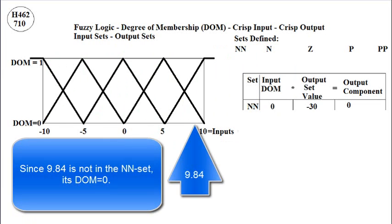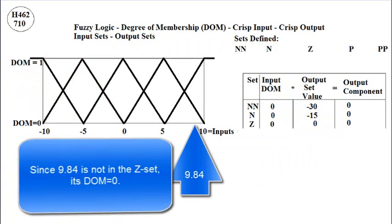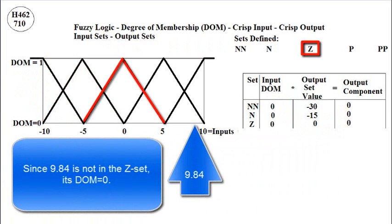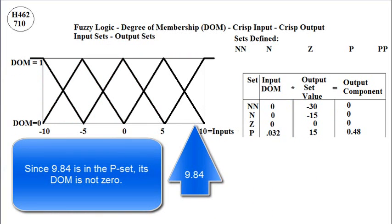Since 9.84 is not in the NN set, its degree of membership is zero. Since 9.84 is not in the N set, its degree of membership is zero. Since 9.84 is not in the Z set, its degree of membership is zero. And since 9.84 is in the P set, its degree of membership is not zero.